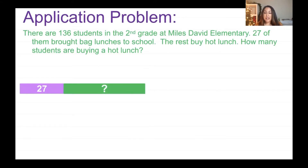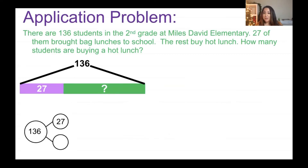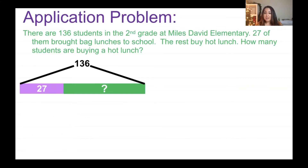They gave me the total number of students, which is 136. When I have a tape diagram, I can take the whole and subtract the part. In a number bond, I put the whole on top and subtract the part. My whole is 136 and my part is 27, so I just need to subtract those numbers. Let's line them up nice and straight vertically.